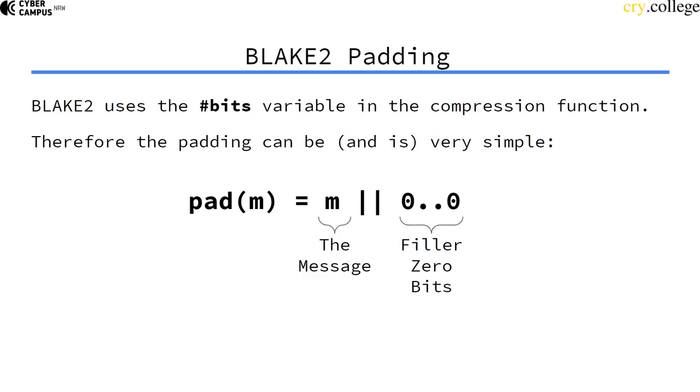BLAKE2 uses the number of bits variable in the compression function, and therefore the padding itself can be quite simple. We just fill the message with zeros until it's a multiple of the block length. It's actually the naive padding, but this time it's okay because in every compression function round we use the already consumed bits.